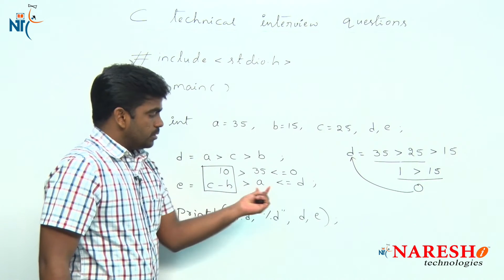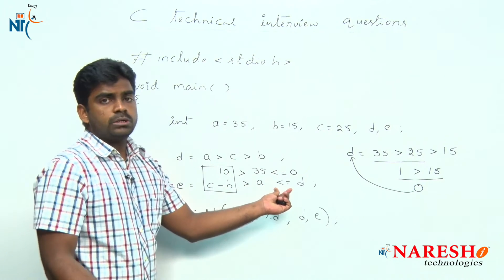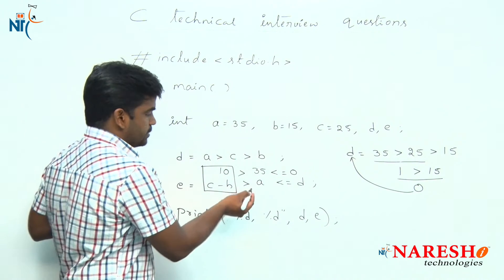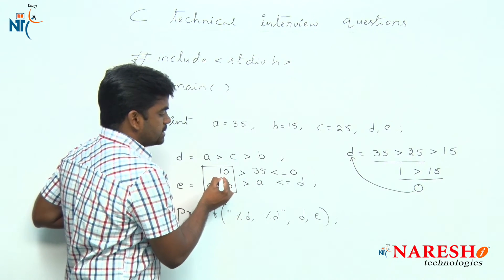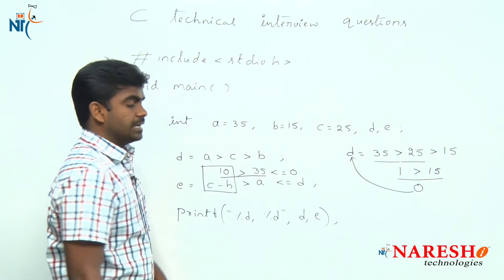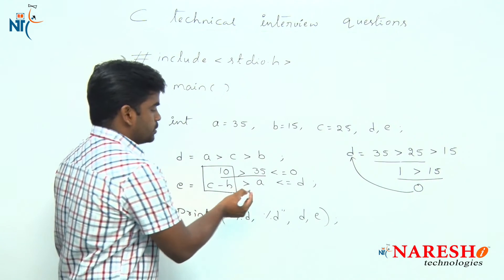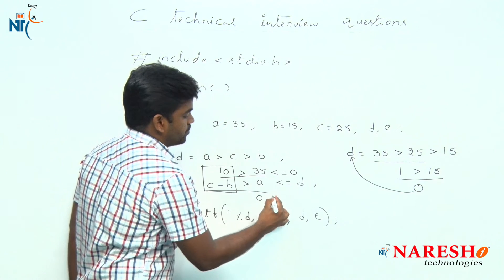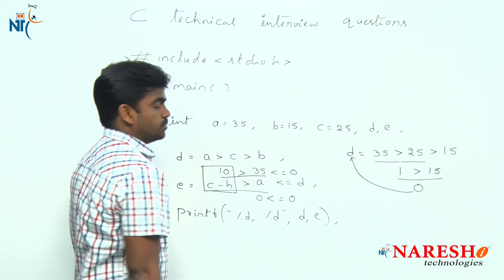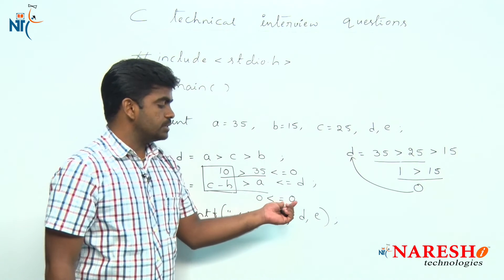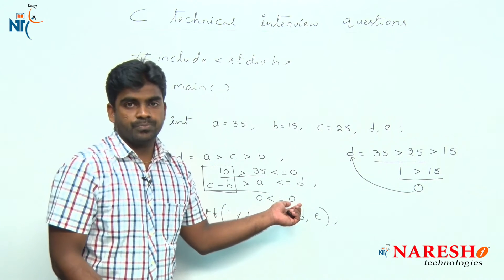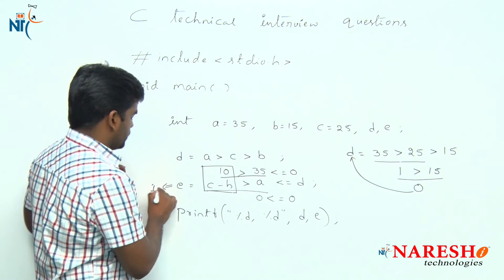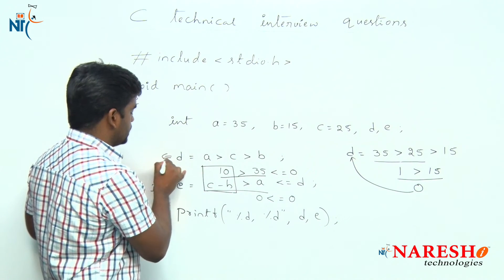The arithmetic evaluation of c minus b gives value 10. Now there are two relational operators with equal priority, so left-to-right evaluation. First: 10 is greater than 35 — the condition has failed, so the result is 0. Then: 0 is less than or equal to 0 — the condition is true. In the true case, it returns the value 1. The d value was already calculated as 0.